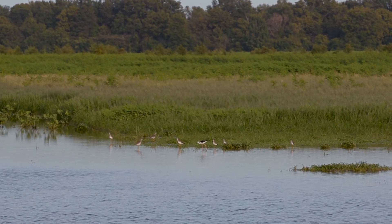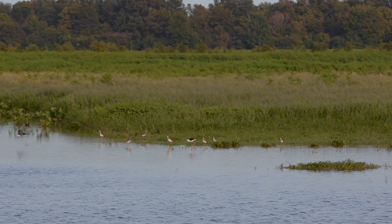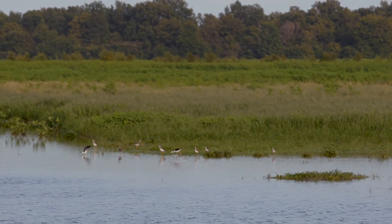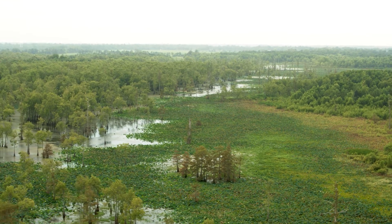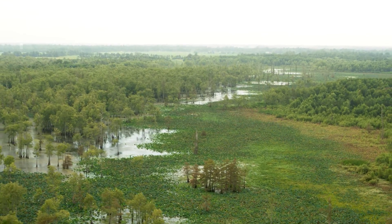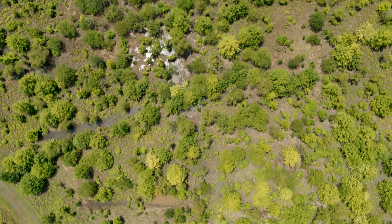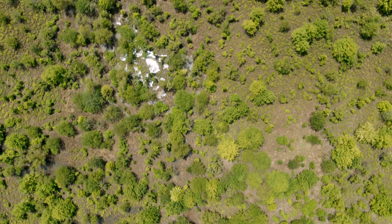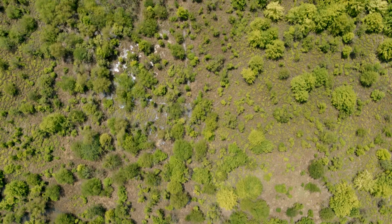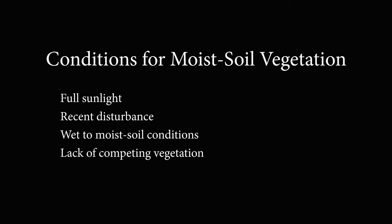Moist soil impoundments represent the earliest wetland successional stage. Historically, they would have occurred after a major disruption in the canopy of a forested wetland or the draining of a deep open water area where little to no vegetation occurred. This resulted in four necessary conditions for annual moist soil vegetation to establish: full sunlight, recent disturbance, wet to moist soil conditions, and the lack of competing vegetation — all occurring during the growing season.